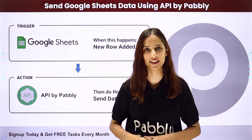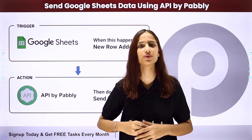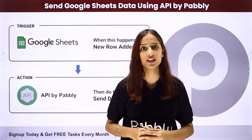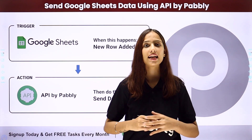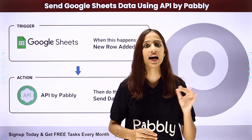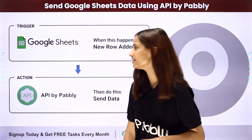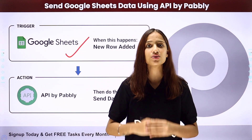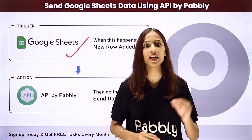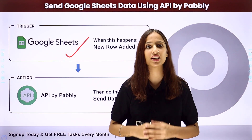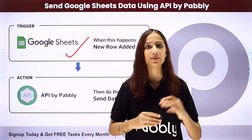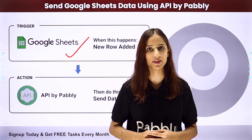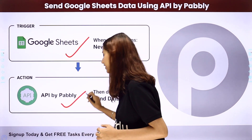Hello everyone, welcome back to Pabbly Connect. In today's video we will learn how to send Google Sheets data using API by Pabbly. Let's say that I have a small business and I am managing the data of my customers in Google Sheets. With this data, I wish to create them as subscribers in MailerLite. As there is no native integration between Google Sheets and MailerLite, I will be using a feature by Pabbly Connect — API by Pabbly.